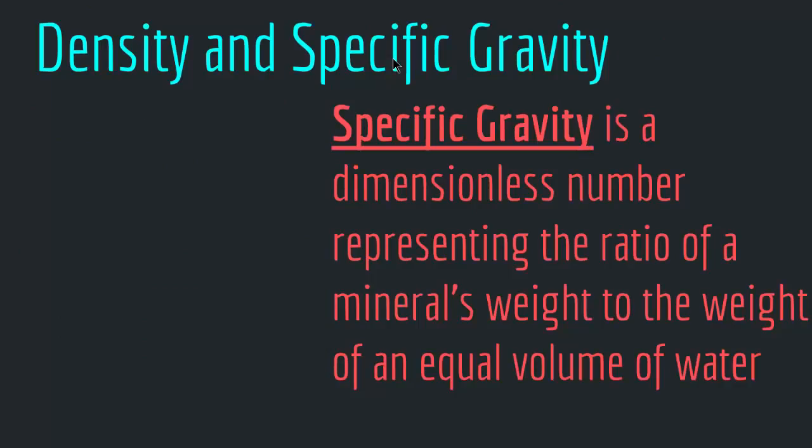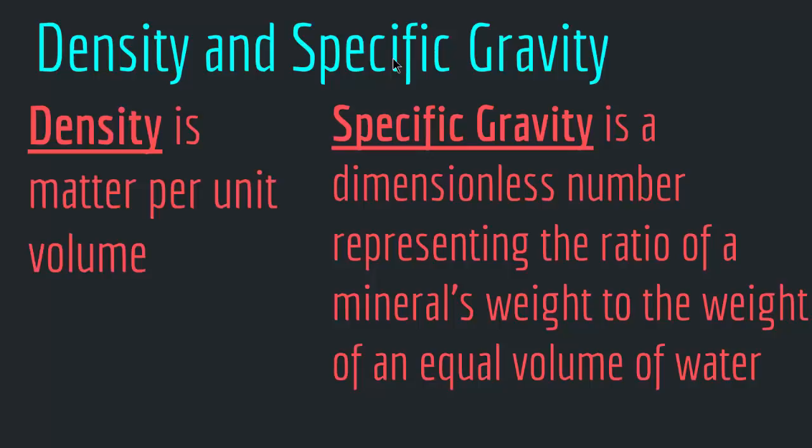Another physical property is density and specific gravity. Specific gravity is a dimensionless number representing the ratio of a mineral's weight to the weight of an equal volume of water. Density is matter per unit volume. We can use density to identify a mineral. In my field geology class, we used specific gravity and density to identify minerals — we took samples, measured the specific gravity, compared them with a list of known specific gravities of different minerals, and found out what kind of mineral we had.